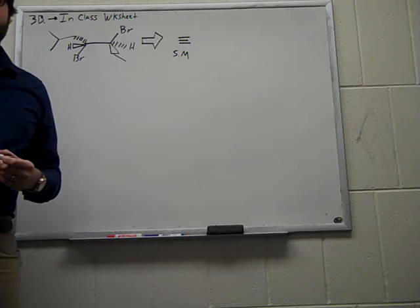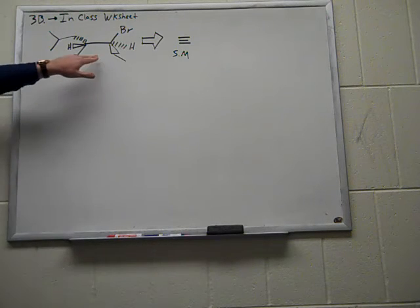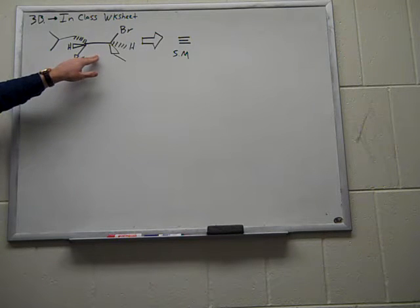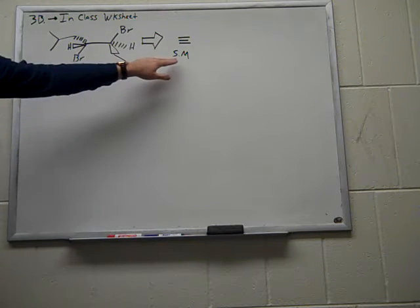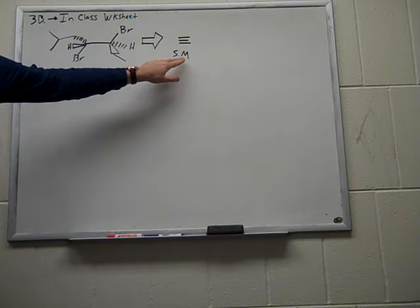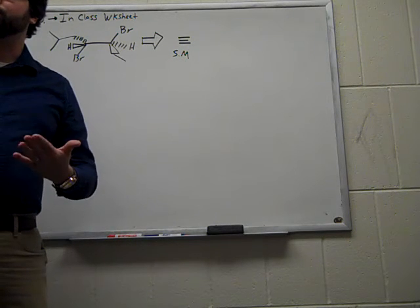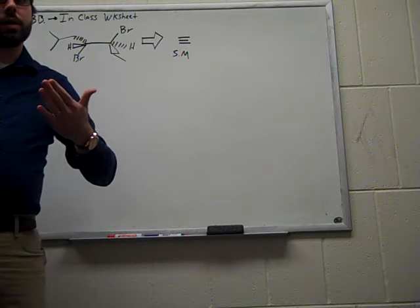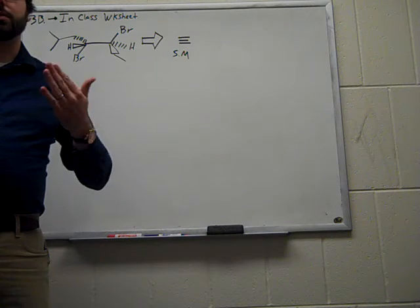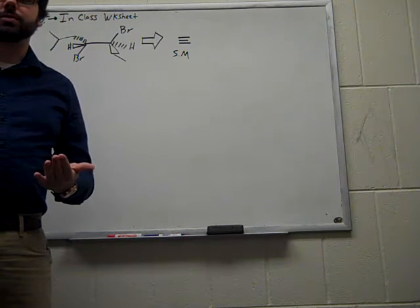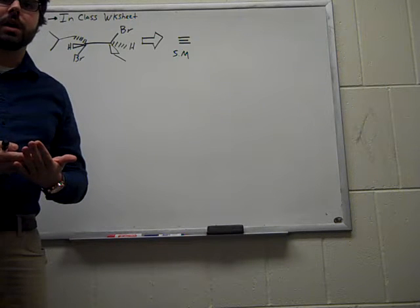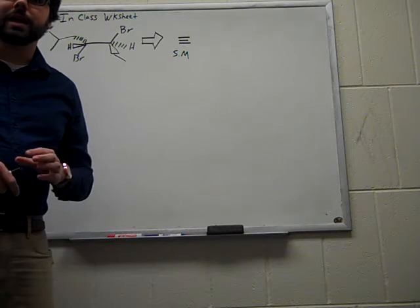And so what this question asks us is to synthesize this dibromine species shown here from a starting material of ethylene. And so the way in which I would really like to think about doing these types of problems is retrosynthetically. Or namely, can we think in sort of a reverse direction that will allow us to sort of see these transformations a little bit easier? So let's go ahead and give this a try.